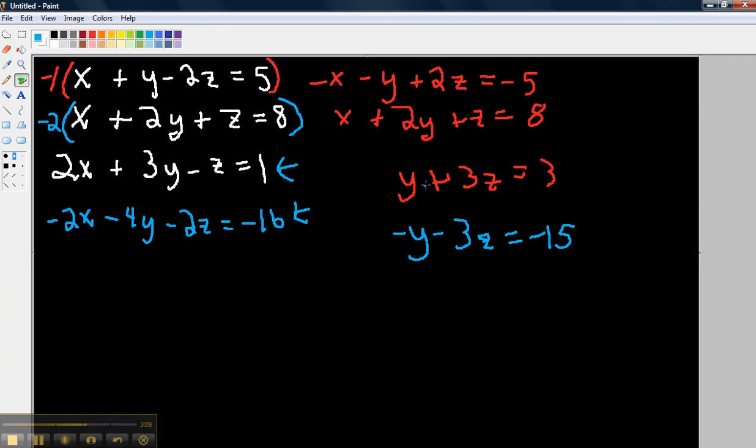Now I'm going to add these two equations. And notice what happens. If I add negative y and y, you get 0. If you add 3z and negative 3z, you get 0. I'm going to add 3 and negative 15, you get negative 12. So you're going to have 0 equals negative 12.